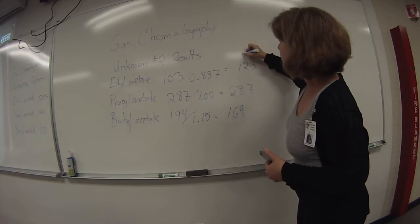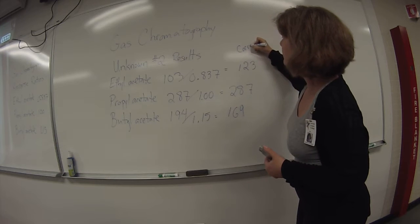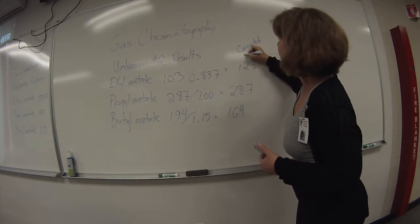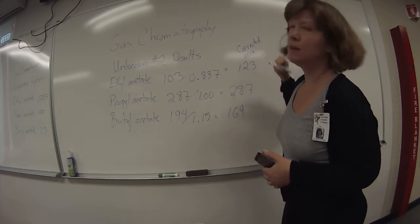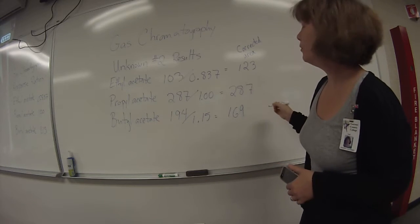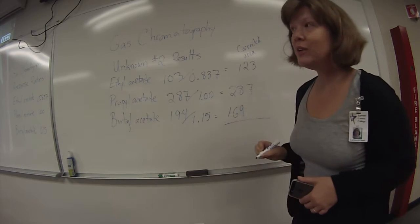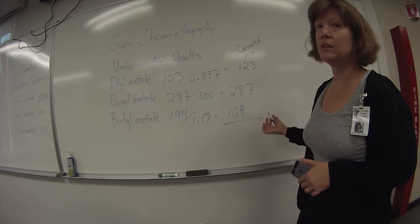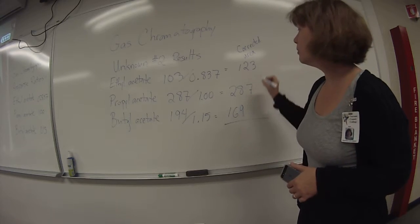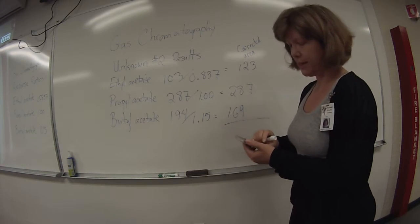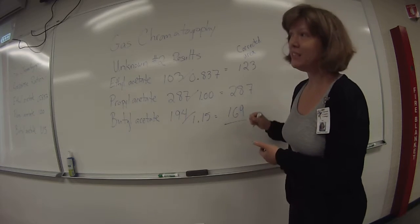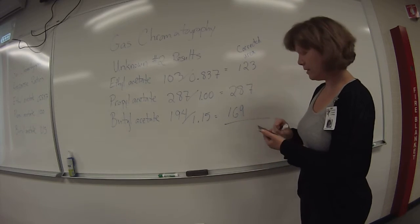So these numbers are the corrected area under the curve for each of the three components. To figure out the percent composition, you need to add together the corrected area, add those numbers together, and figure out the percent of each compound using these corrected areas.